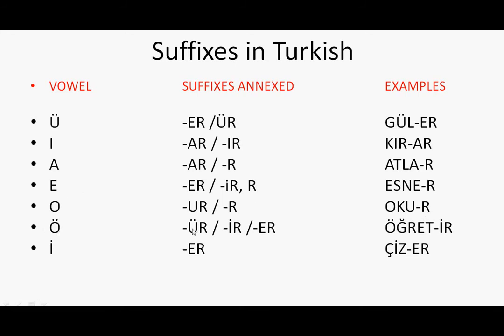For the vowel Ö, you use ÜR, İR, or ER. For example, Öğret means 'teach.' Öğret + İR = Öğretir. We use the İR suffix because the verb finishes with the E vowel. And another example — ÇİZ means 'draw.' Because it ends with the E vowel, you use ER here: he, she, or it draws.